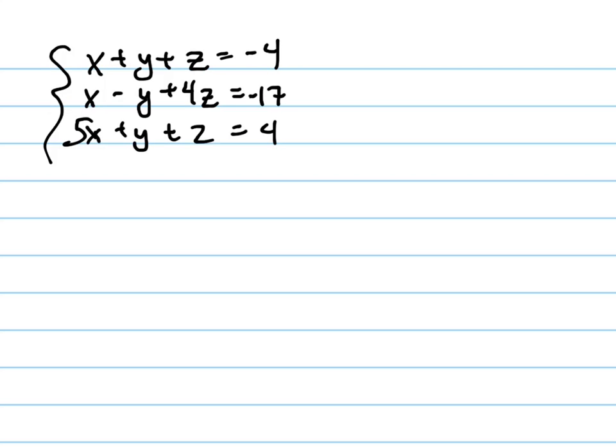Let's solve this system of equations, and notice it's a 3 by 3 equation, meaning 3 equations. We'll call this A, B, C, with 3 unknowns, X, Y, and Z.